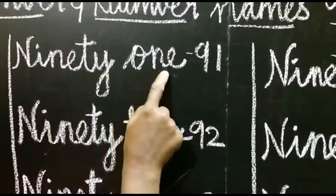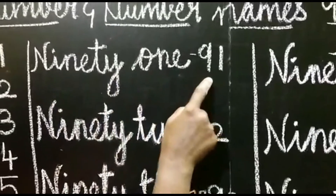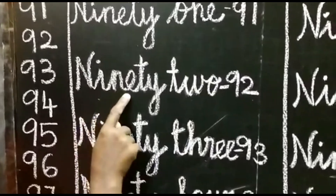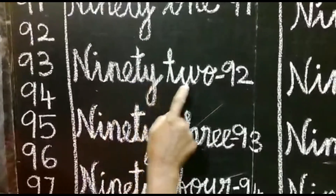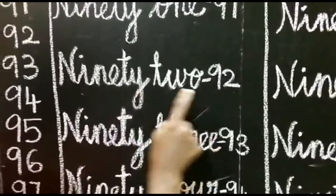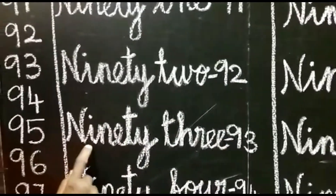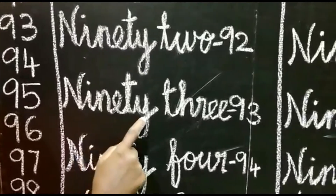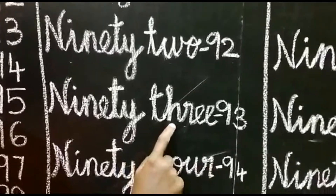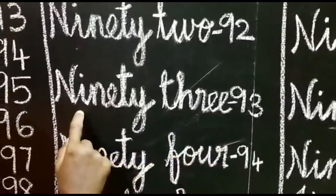Now let's review: 90 — N-I-N-E-T-Y. 1 — O-N-E. 91. Then 92 — N-I-N-E-T-Y, T-W-O, 2, 92. Then 93 — N-I-N-E-T-Y, T-H-R-E-E, 3, 93.